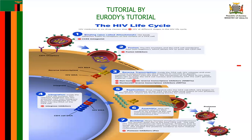Drugs such as nucleoside and non-nucleoside reverse transcriptase inhibitors affect this stage so that it does not progress further. What is happening here is that the HIV RNA is transcribed to HIV DNA, it enters the nucleus, and then we move on to stage four in the life cycle of HIV.